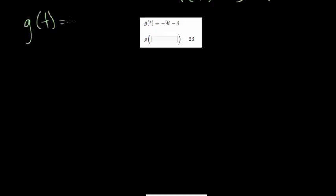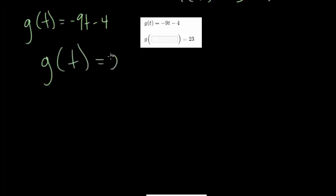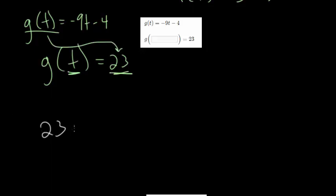Let's go through several more for practice. All these problems are very similar: we're given an equation for the function and we're told that the function with some mysterious input value gives a known output. In this case we know that when we plug in whatever that mysterious t value is, we get back 23 — though we don't know what it is. What we can do is set our function equal to this output value 23, setting it equal to the equation minus 9t minus 4, and solve for t.